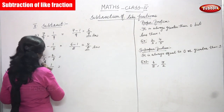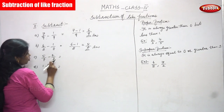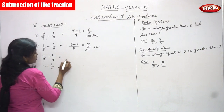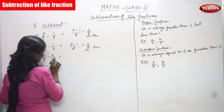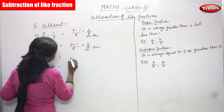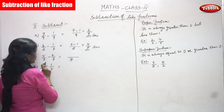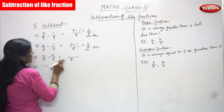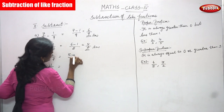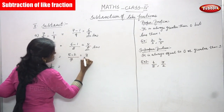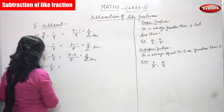The next sum is 5/7 minus 2/7. Looking at the denominators, both are the same — that means it is a like fraction. So you write the denominator one time, then subtract the numerators: 5 minus 2 gives you 3/7, which is the right answer.